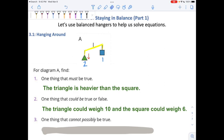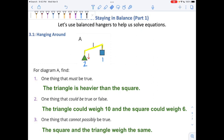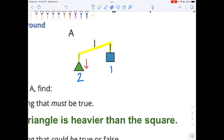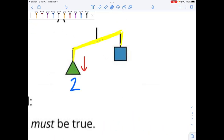And then number 3, one thing that cannot possibly be true. The square and the triangle cannot weigh the same. If they weighed the same, if the square also weighed 2, then the hanger would have to be perfectly across. Do you see the difference? So, because the hanger is tilted, we know that the square and triangle cannot weigh the same. So, it can't be 2 and 2. It can't be 4 and 4. It can't be 100 and 100. If it's tilted, then they can't weigh the same.